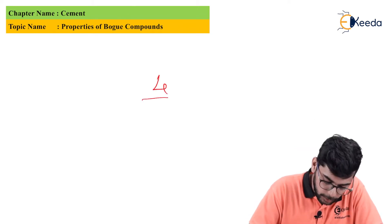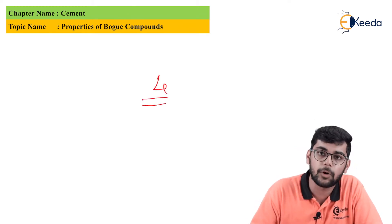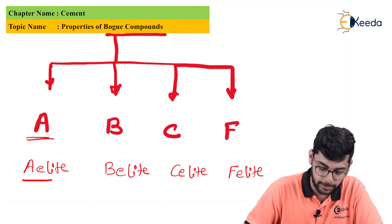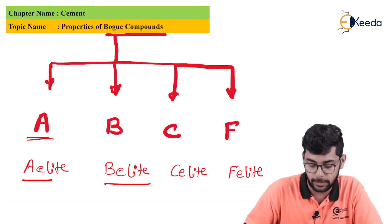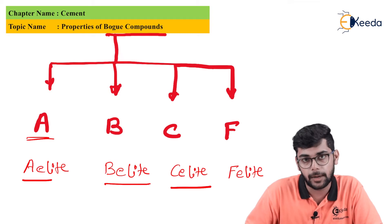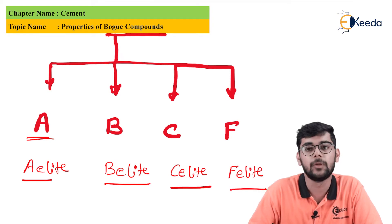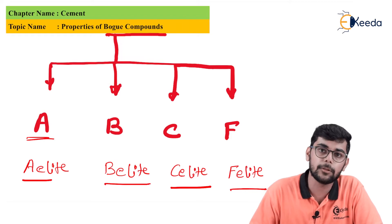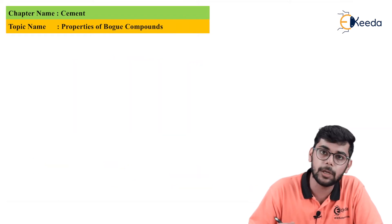There are four different kinds of Bogue's compound. They are allite, bellite, cellite and cellite. These compounds define the properties of cement. So let's study about them.